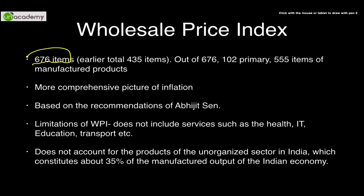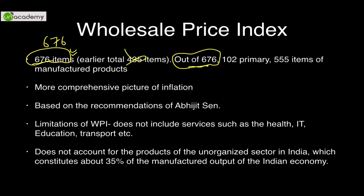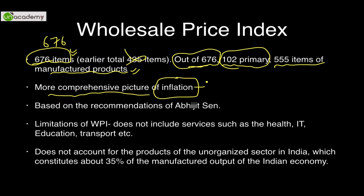There are a total of 676 items in WPI, revised from an earlier 435. Out of 676, roughly 20% are primary products and 555 items are manufactured products — the secondary sector. WPI provides a more comprehensive picture of inflation and is based on the recommendation of Abhijit Sane.